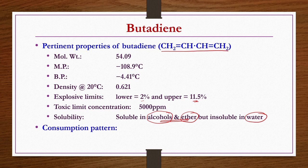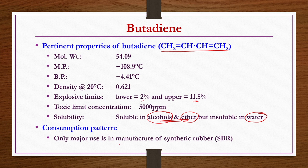Regarding consumption pattern, the only marketable use of butadiene is in manufacturing of synthetic rubber, especially SBR — styrene butadiene rubber. Production of SBR will be discussed in the last chapter of the course on rubber industry, whereas the production of the other monomer styrene will be discussed in the polymerization chapter.